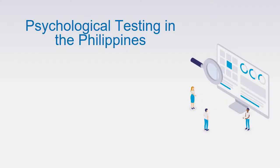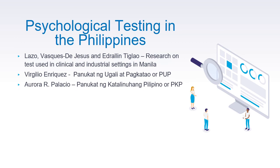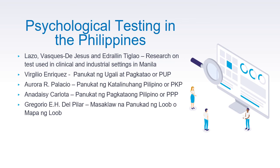Lazo Vasquez de Jesus and Edralin Tiglao conducted research on tests used in clinical and industrial settings in Manila. Our father of Philippine Psychology, Dr. Virgilio Enriquez, created a psychological test called the Panukat ng Ugali at Pagkatao or PUP. Psychologist Aurora R. Palacio also created the Panukat ng Katalinuhang Pilipino or PKP. Ana Daisy Carlota created the Panukat ng Pagkataong Pilipino or PPP. And Gregorio E. H. Del Pilar created a test titled the Masaklaw na Panukat ng Loob o Mapa ng Loob.